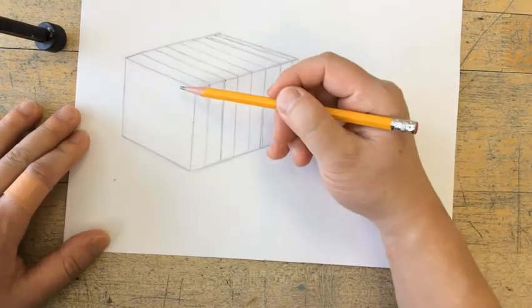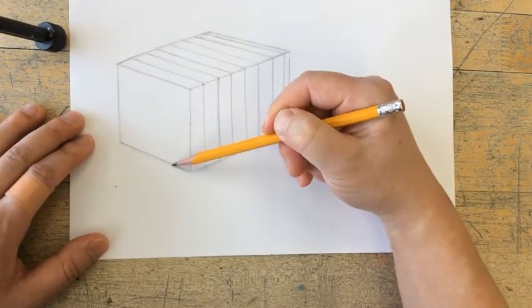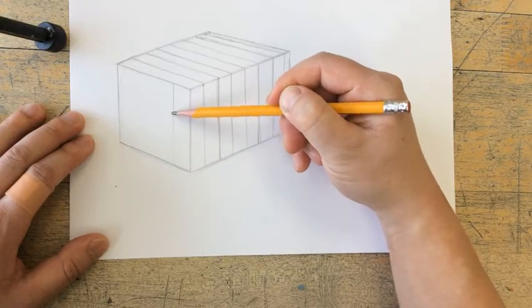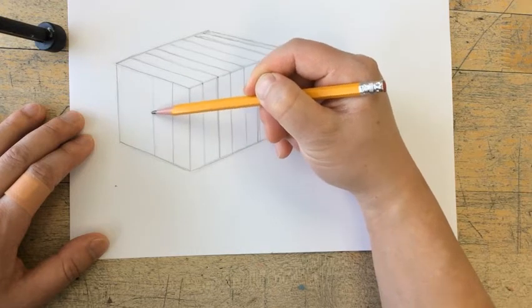Now that I have that side and the top done, I'm going to go work on the other face of my cube. I'm going to have these vertical lines on this side as well.